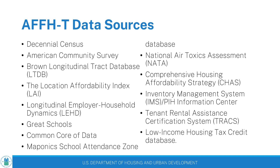The AFFH-T's underlying dataset is a unique collection of information derived from 13 different data sources that capture information on demographic, housing, education, health, transportation, and economic conditions, including a series of indices created specifically to support fair housing planning and a robust set of variables related to protected classes under the Fair Housing Act.